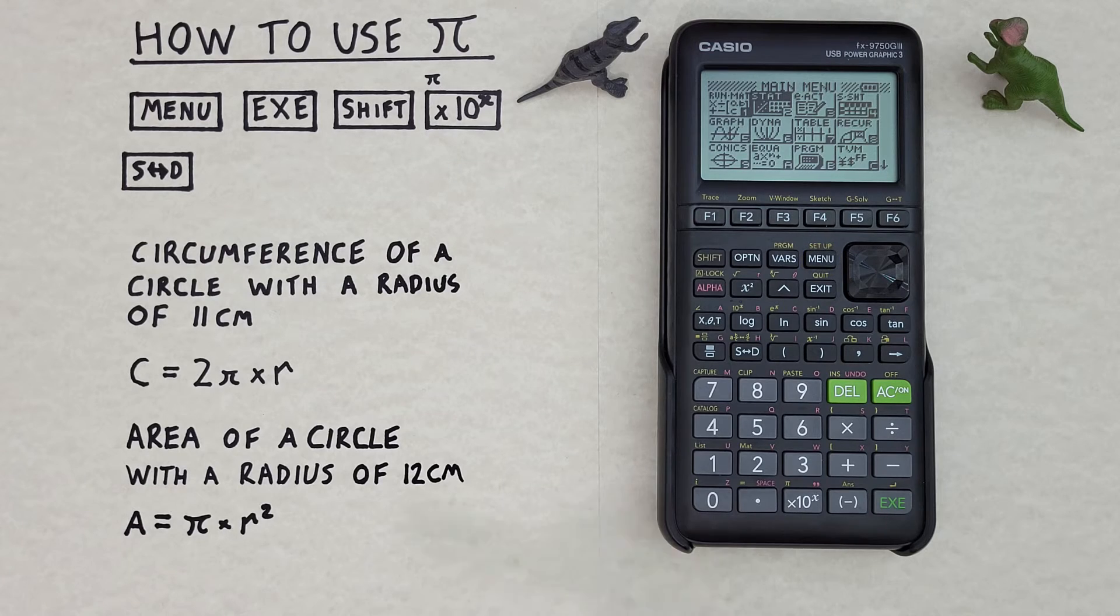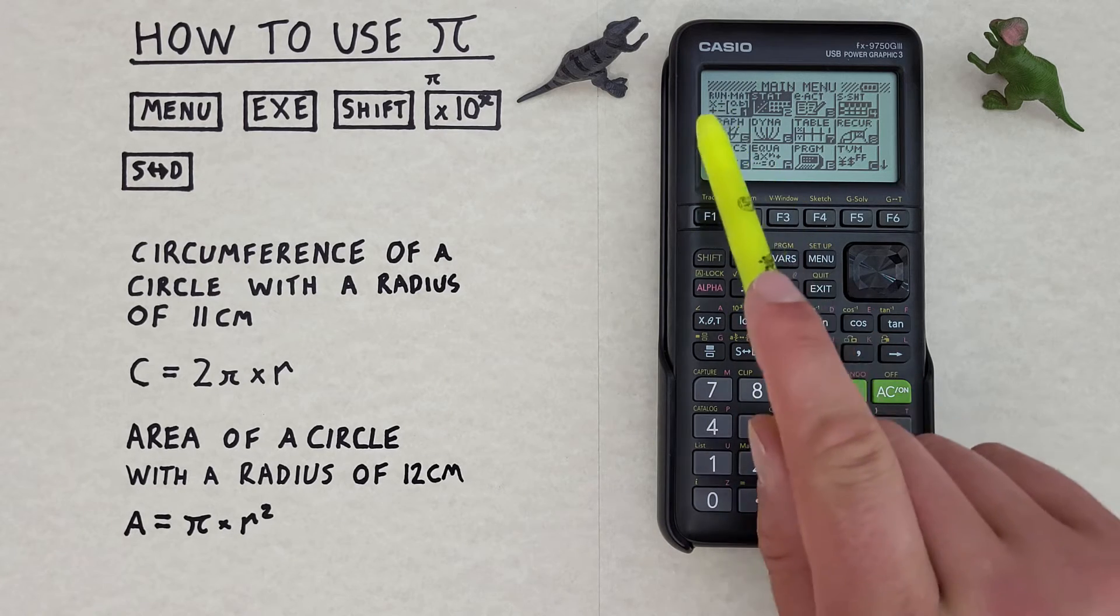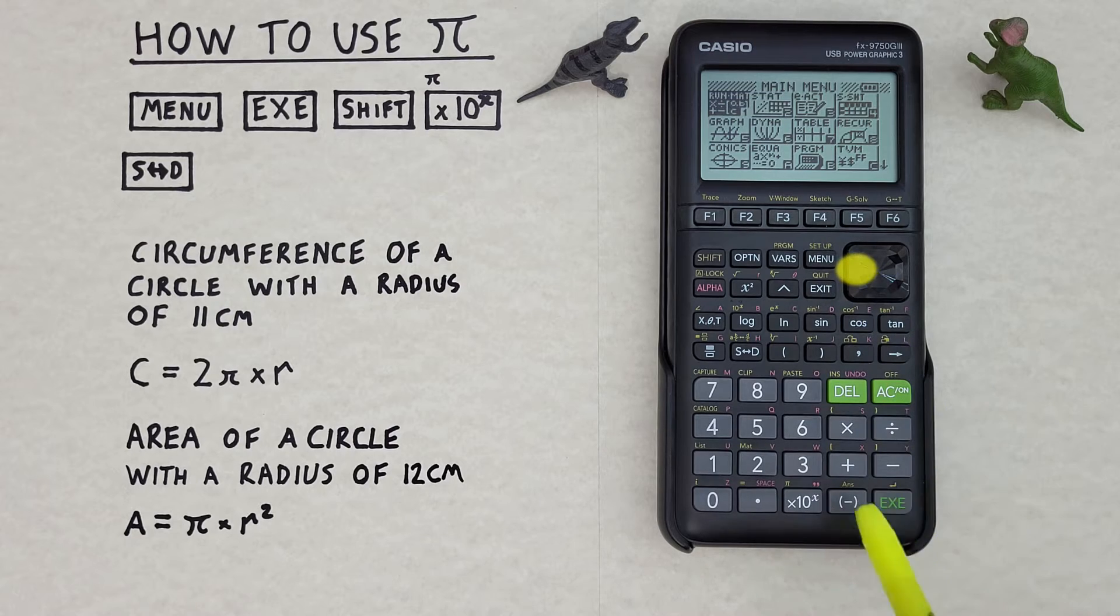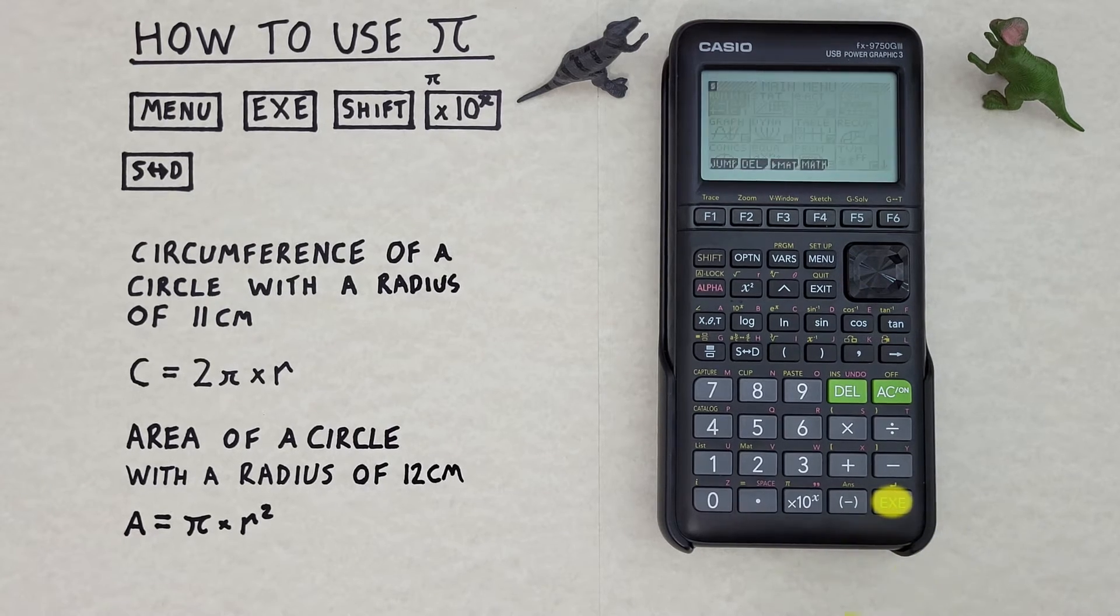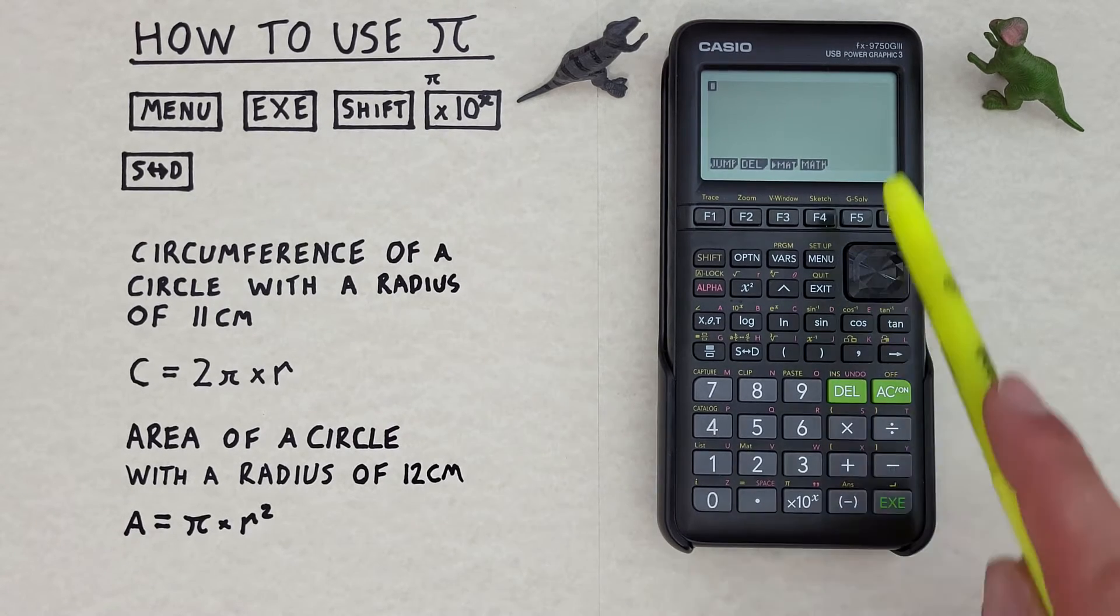Now to work with Pi we want to be in the run mode. That's this one in the top left, so we'll highlight that and press the exe or execute key. There we go, now we can begin working.